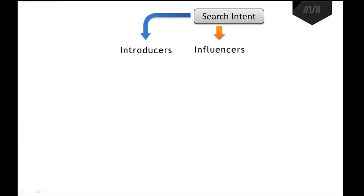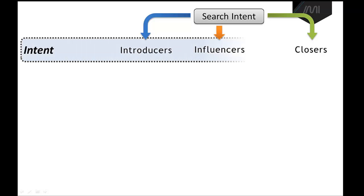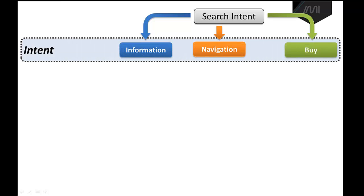To show that even further, if we look at the intent of a user, there's introducers, influencers, and closers — that is more the type of traffic you get. If you notice the intent of the person, it's all different: it's either they're searching for more information, doing some type of navigational search to find a specific page on your site, or maybe they want to buy a product or service.